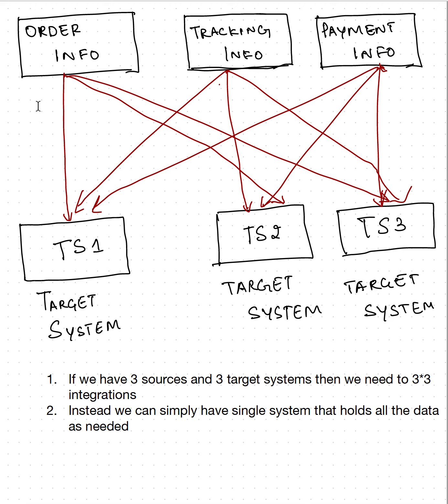If I'm having a company and there are three different types of data streams coming into our systems - we have order info, tracking info, and payment info. Order info has information related to an order, for example the quantity and type of product you placed. In tracking info you get details on when the package would be shipped, the tracking number, and which carrier it's being shipped through. In payment info we have details like what type of payment method you are using - Apple Pay, credit card, debit card, etc.